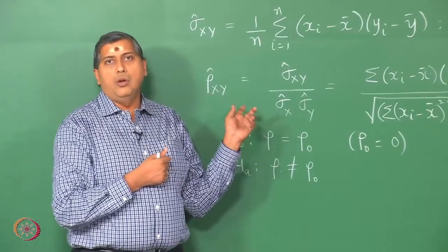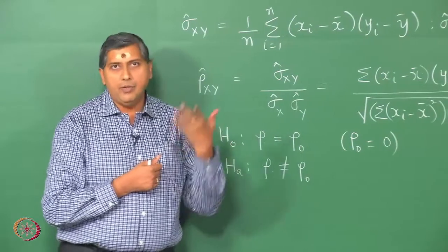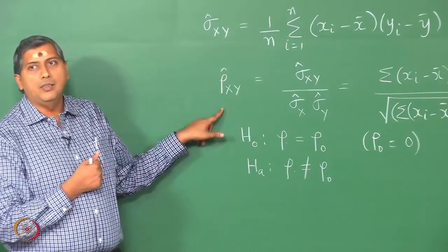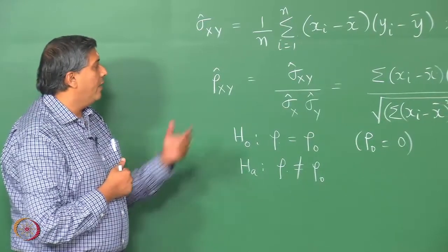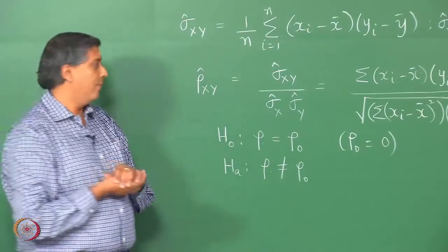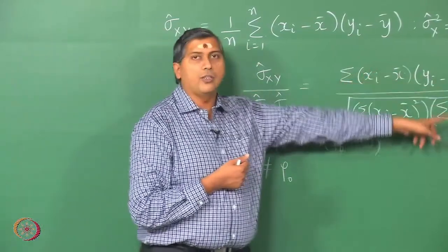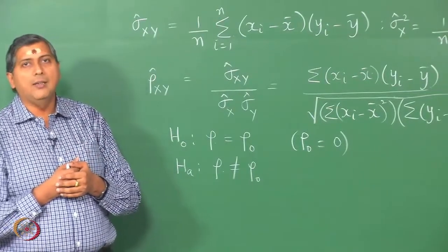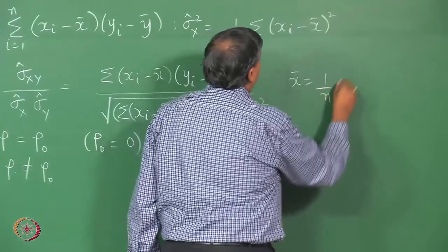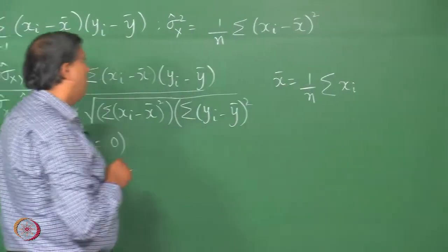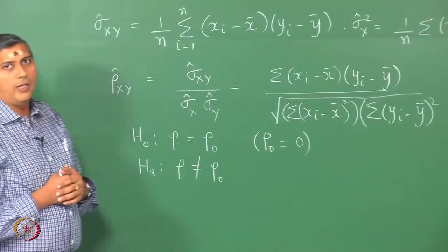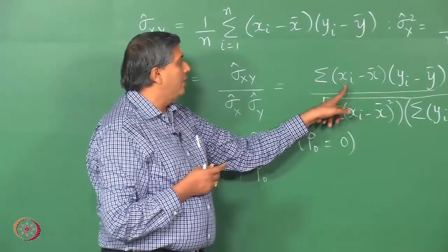Before we proceed to learn how to conduct this hypothesis test, we know that to conduct a test like this, we need the sampling distribution of the sample correlation. The difference between this estimator versus, say, an estimator of the mean, is that the correlation estimator is a non-linear function of the observations. We say that this is a non-linear estimator of the parameter. Whereas if you take the sample mean x-bar, this is a linear estimator, and it was easy to derive its sampling distribution using the central limit theorem. But here it is not so straightforward to derive the sampling distribution of correlation given the distribution of x and y.